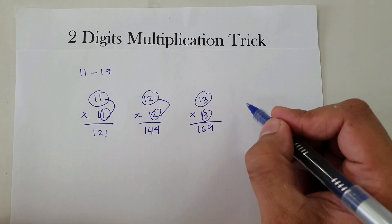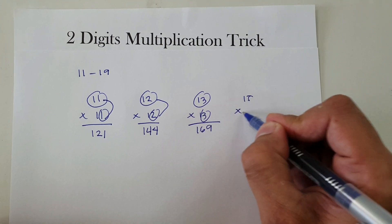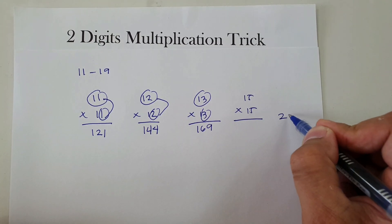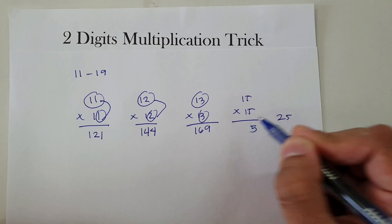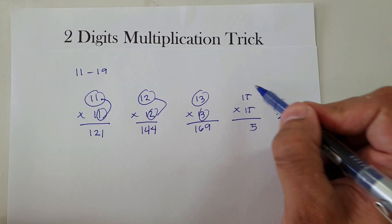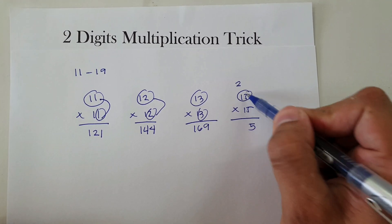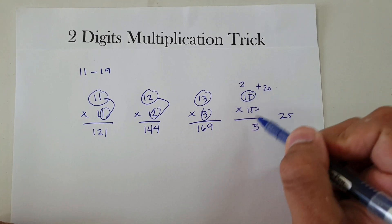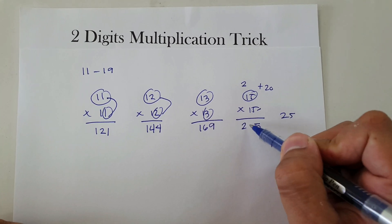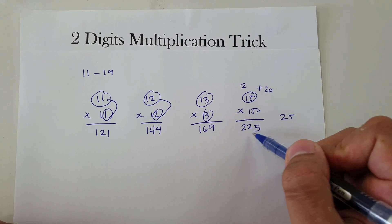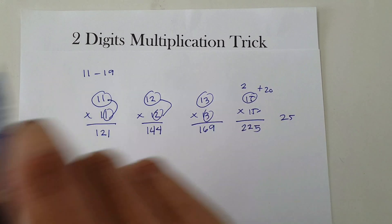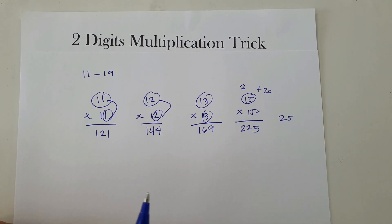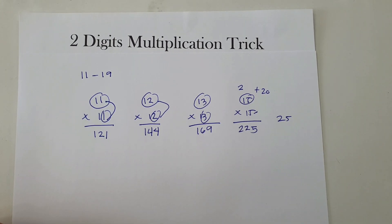For our last example, let's say 15 times 15. 5 times 5 is 25, so we write 5 and carry 2. Then 15 plus 5 is 20, plus the carried 2 is 22. So 15 times 15 is 225. Again, this technique is applicable only to numbers 11 to 19.